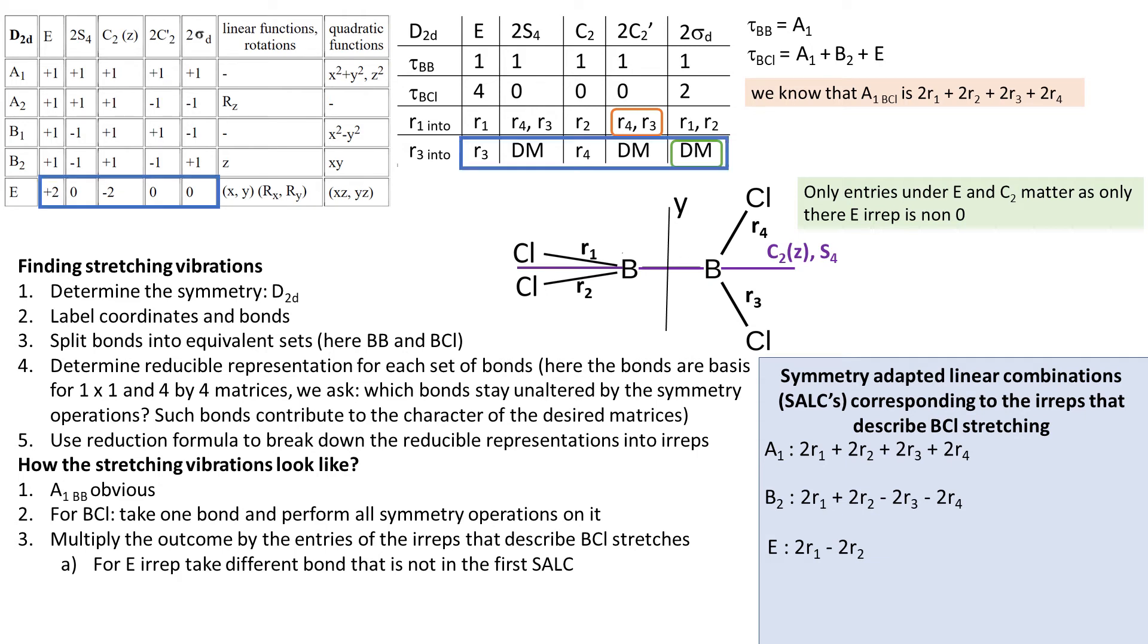As only these entries are non-zero in the E irrep. So if we multiply this line by E irrep, we get 2R3 minus 2R4.